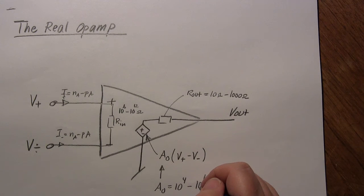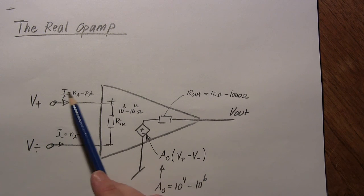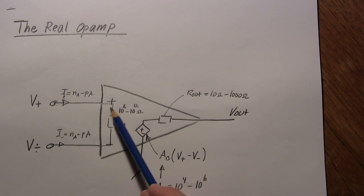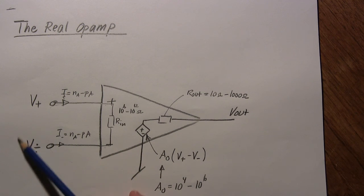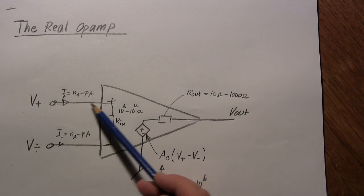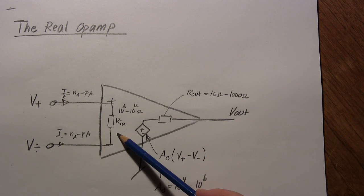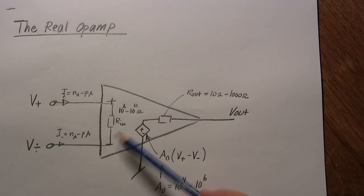So for the real op-amp, we can expect a small current to flow into the input pins. Anything connected to the input pin will experience this small current, and we can model that with an input resistor.